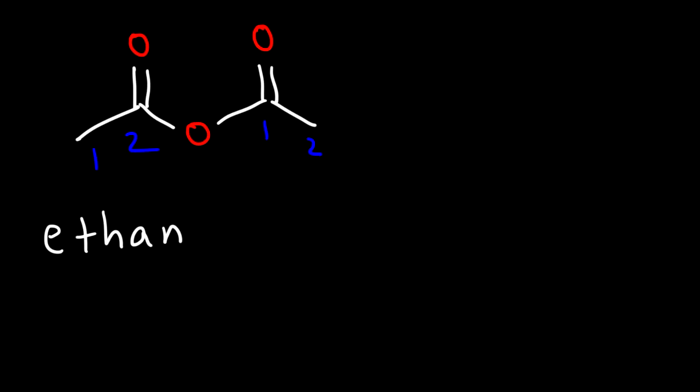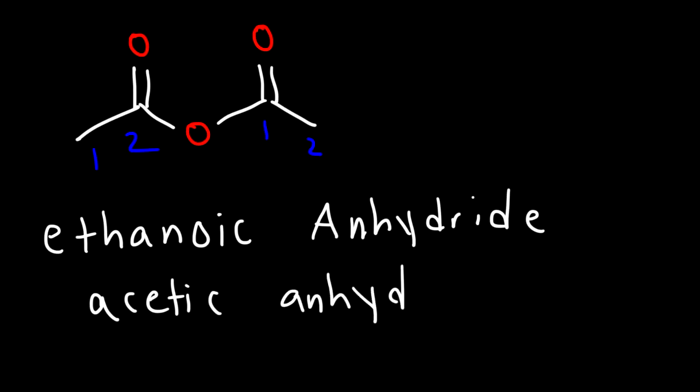But in this case, when dealing with anhydrides, take off the E and add oic. So this is called ethanoic anhydride. The common name for this molecule is acetic anhydride. Acetic is always associated with two carbons.